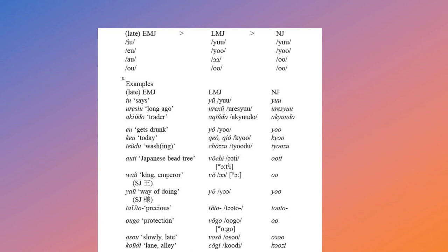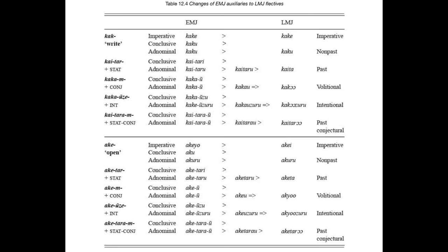Phonetically, we see changes to the long vowel sounds, so we get that signature ee sound. Back in grammar, as we get to the Late Middle Japanese period, the only surviving category from Early Middle Japanese is the imperative tense. A lot of remaining auxiliaries were either lost or changed from auxiliary to flexive, and the only one truly to remain was the negative auxiliary, which persists into modern Japanese.